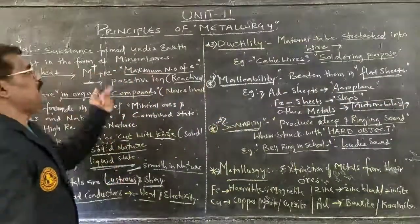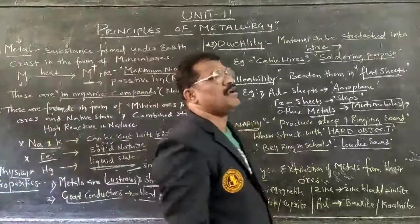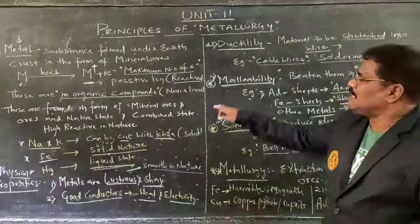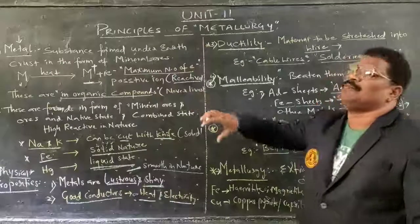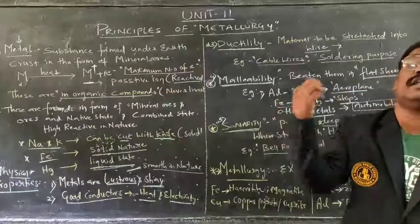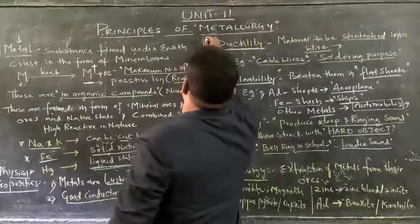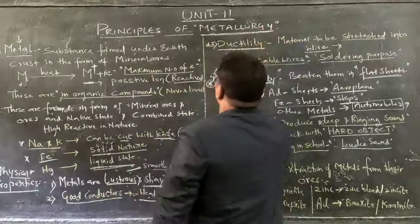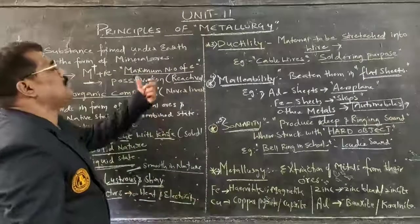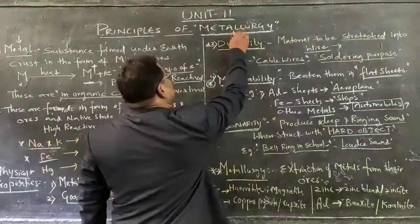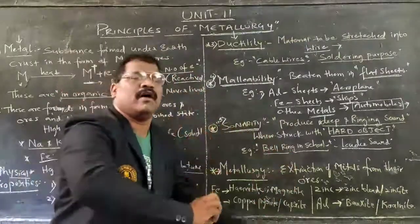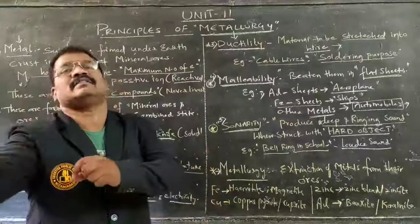Due to the existence of these five physical properties, metals play a prominent role in our life. That is why a new concept came into existence called metallurgy — the extraction of metals from their ores. They exist in the form of mineral ores, individual ores, or as native state.